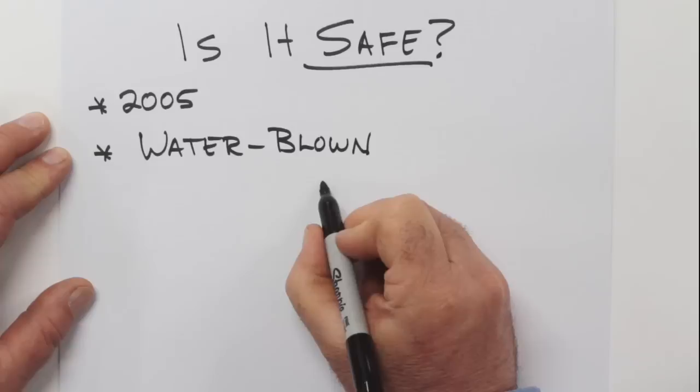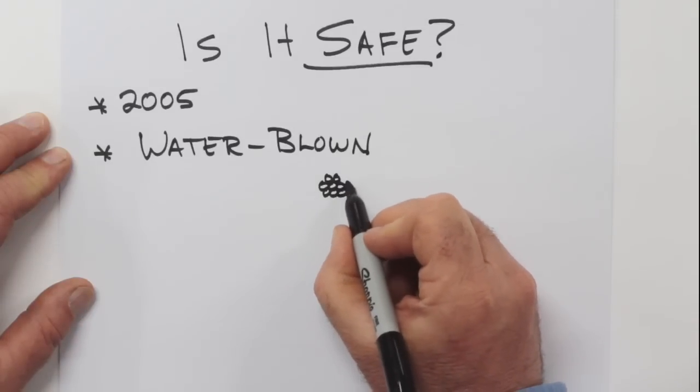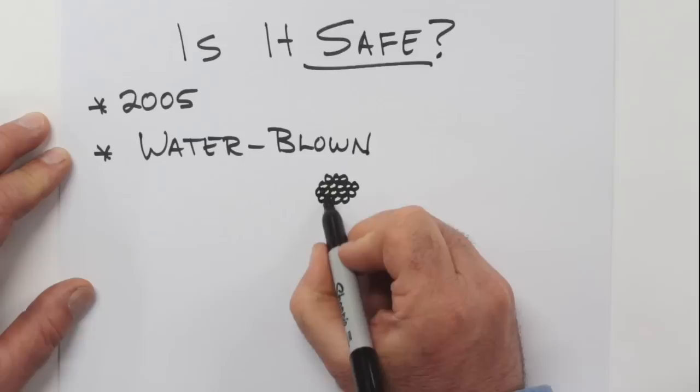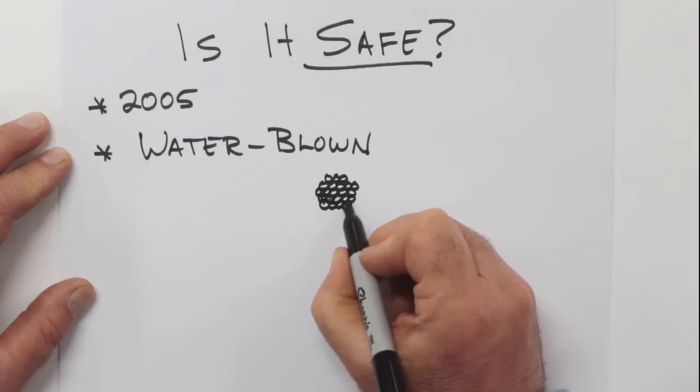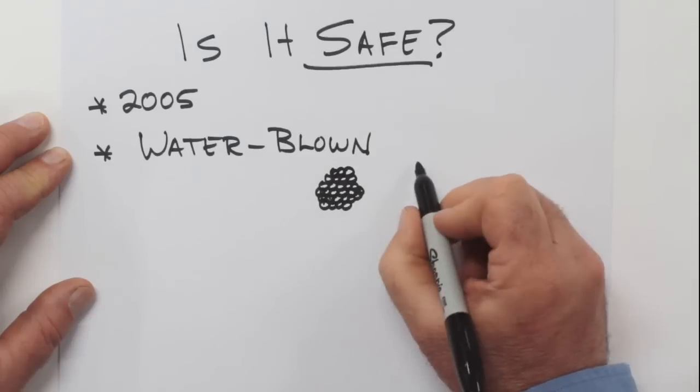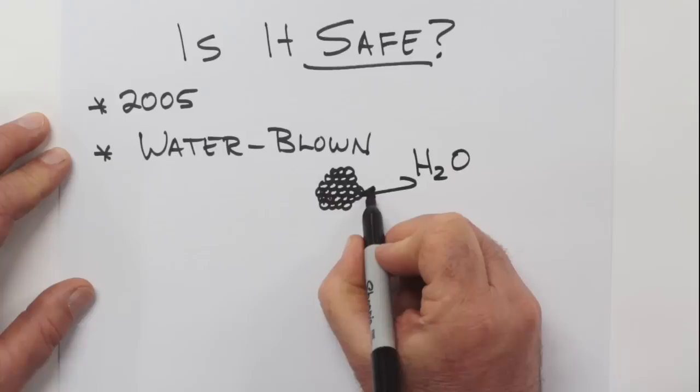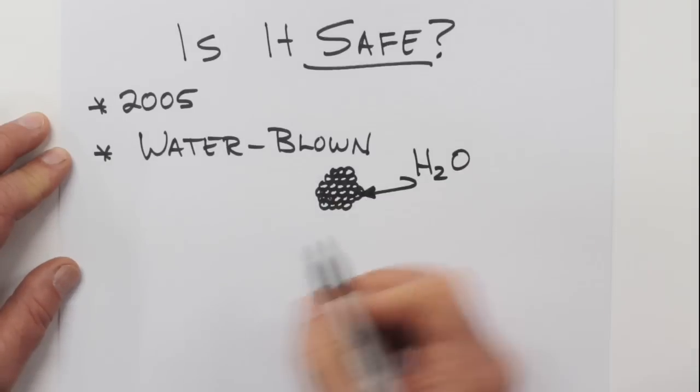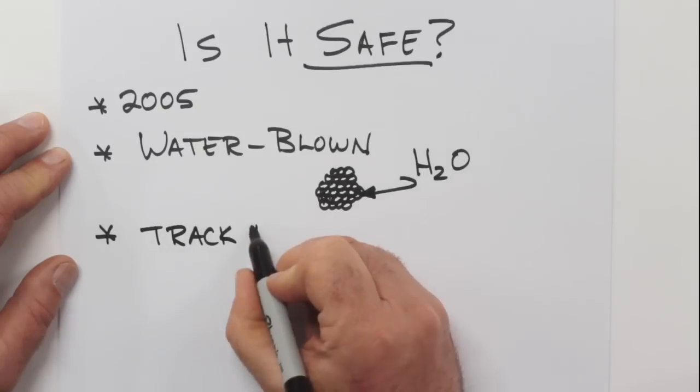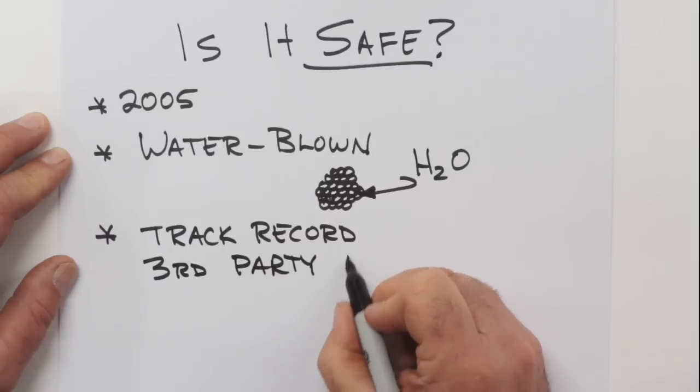So what does water-blown mean? Well, all spray foam is made up of a whole bunch of little bubbles that have hardened. The product initially is a liquid, and something turns that liquid into bubbles, and that something is the blowing agent. Well, what they use for the Isonene product I specified to make this blowing happen is water-based. That's one reason Isonene has a safety track record going back to the 1980s and multiple third-party verification of the safety of their chemistry.